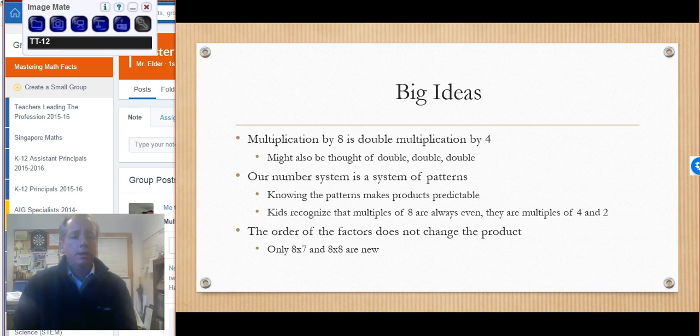The big ideas: the doubling piece, the double, double, double is one of the big ideas with eights. Always coming back to our number system in order to make sense of it. In order to really have good number sense, we have to recognize that there are patterns that go on and that those patterns repeat themselves over and over again. And that makes our numbers predictable. It makes our answers and our solution strategies predictable. And finally, that the commutative property continues to hold true. The order of the factors doesn't change the product. So even though we're going to be talking about our eights, we're really focusing on seven times eight and eight times eight, because every other factor we've already done at this point.